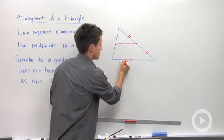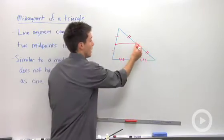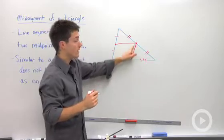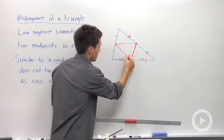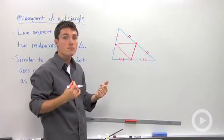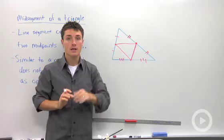There are three midsegments in every triangle. If I find the midpoint of this third side, I can connect those two midpoints and that would be a midsegment, and I can connect those two points and that would be a midsegment. So every midsegment will be within the triangle, and there will be three in every triangle.